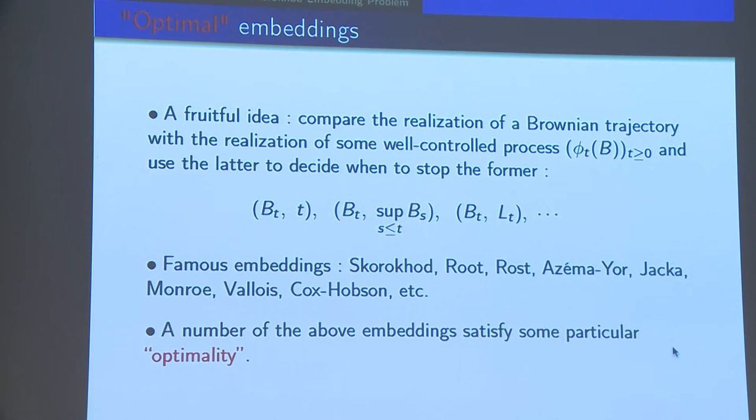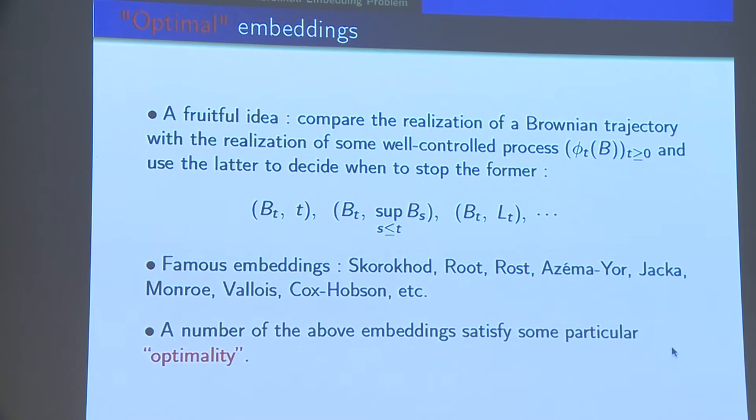This problem is initiated by Skorokhod and various solutions are achieved afterwards. A very artistic idea is the following. They compare a realization of a Brownian path to another well-controlled process, usually depending on the Brownian motion, and use the latter to decide when to stop the former. So if we take this well-controlled process phi to be t, a deterministic process, we get the Root solution. If we take the running maximum, we get Azéma-Yor solution. And if we take the local time, we get Vallois solution.